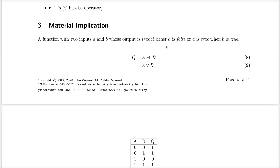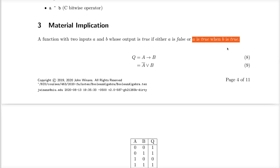Material implication, sometimes abbreviated IMP, is included here for completeness — there is no dedicated operator for it in C. The function has two inputs and its output is true if either A is false, or A is true when B is true. It's drawn with an arrow: A implies B. In simplest terms it equals A-bar OR B. When A is false, A-bar is true, and anything OR'd with true is always true, so Q is true for all rows where A is zero. When A is true, the output equals whatever B is. In C you can express this using the ternary operator, or as (!A || B).